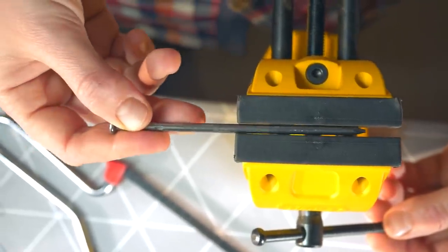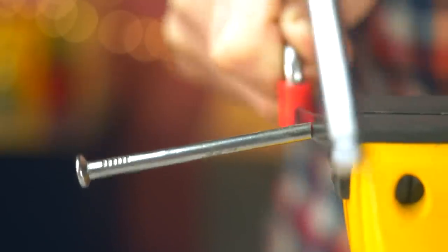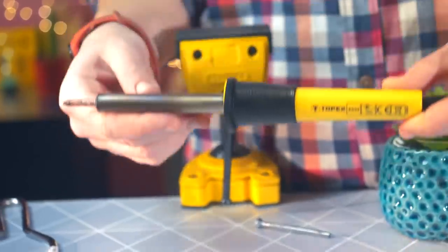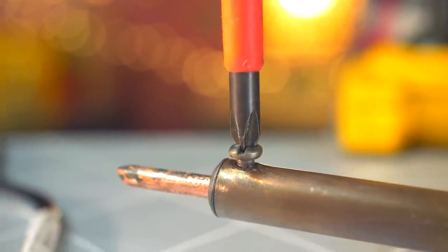Then clamp the nail in a vise and cut it in half using a small saw. After that, take an ordinary soldering iron, from which you need to take out the copper sting and insert a piece of the nail with a head instead of it.